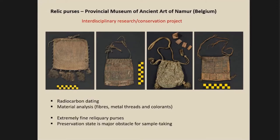It's a collection of seven relic purses that belong to the provincial museum of ancient arts in Namur. They have been collected in the third quarter of the 19th century from different abbeys and churches, and they now belong to the archaeological society in Namur. They have only been published in a small catalog from the museum in 2007, and two years ago they started a large interdisciplinary research and conservation project to study them in depth and to safeguard them for the future.